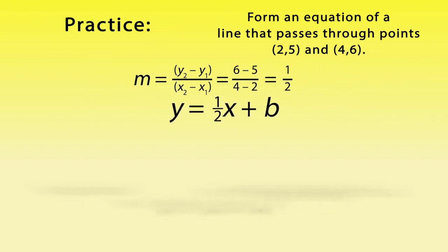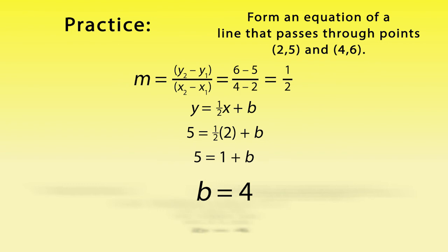Now that you have Y equals ½ times X plus b, you can take the values for one of the points and substitute them for X and Y. You get 5 equals ½ times 2 plus b. In this case, b equals 4.